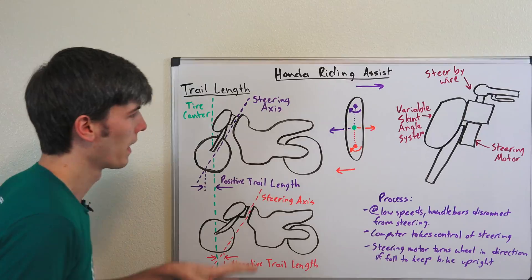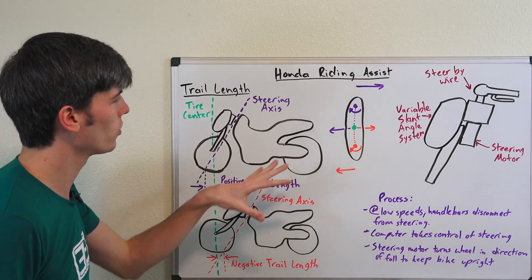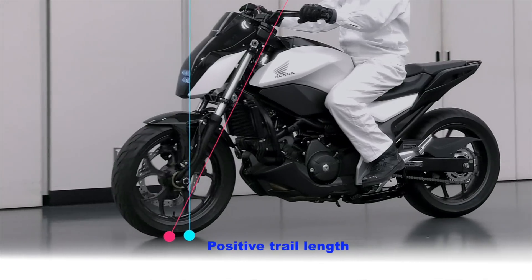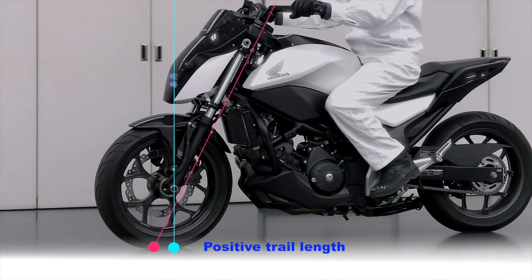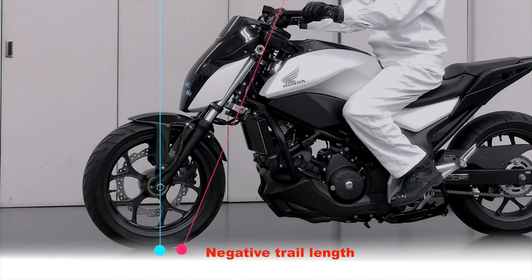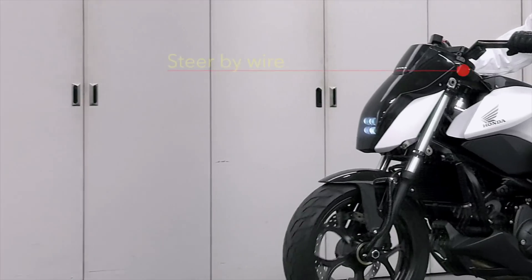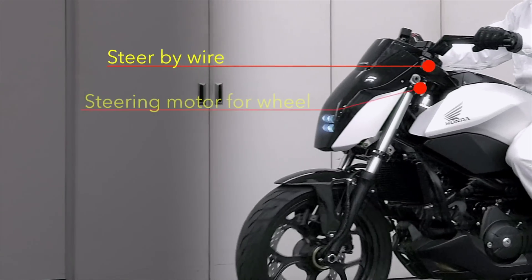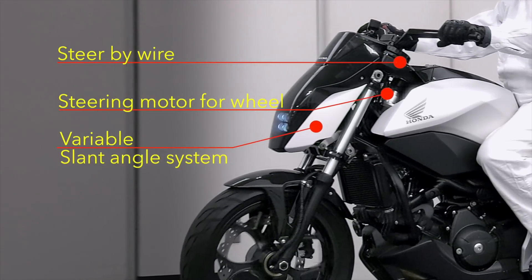They've got a simple setup: a variable slant angle system which extends the front of the bike out, a steer-by-wire system for low speeds, and a steering motor so that the computer can take over control.